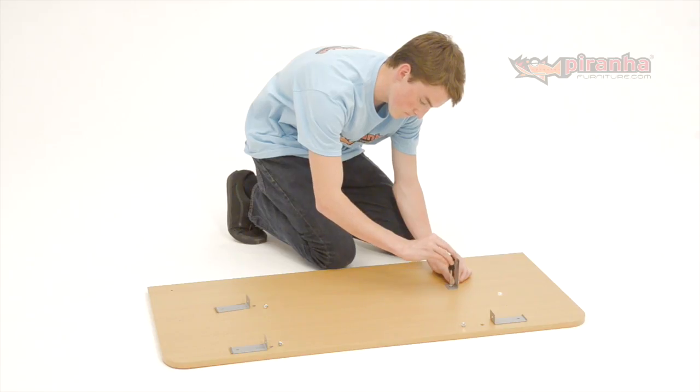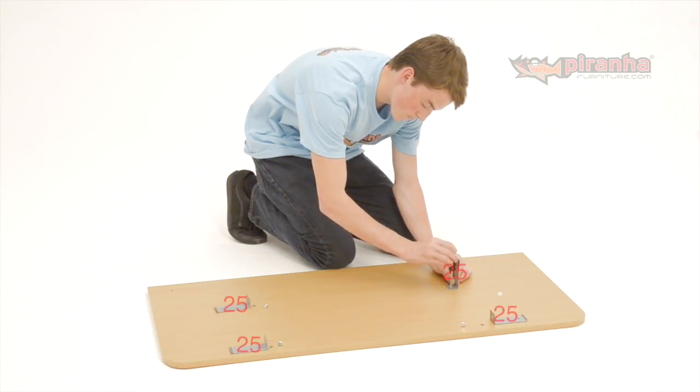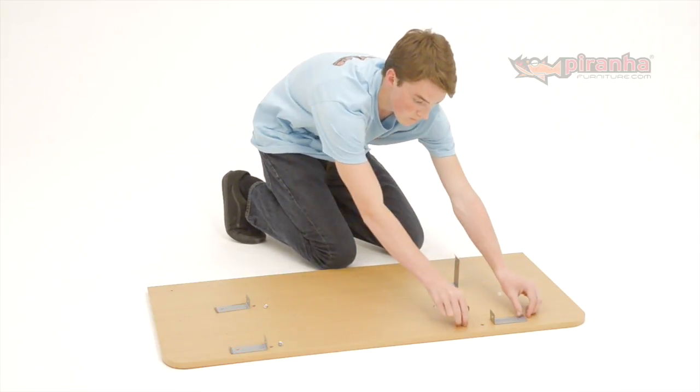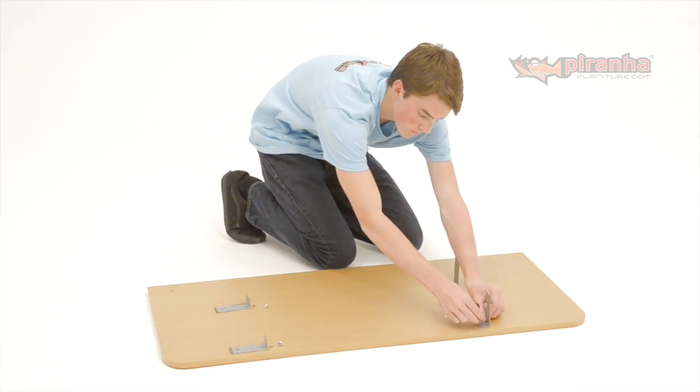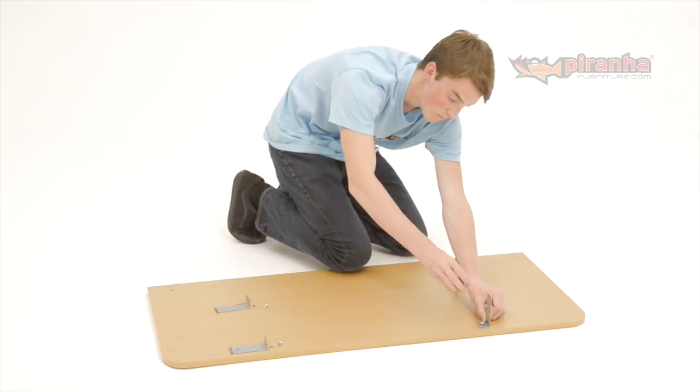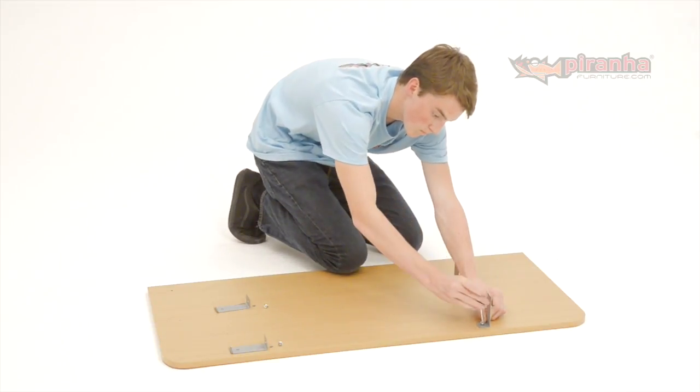Step 18. Place the desktop upside down on a non-scratch surface. This could be some of the cardboard packaging, for example. Then, attach the four keyboard tray brackets to the desktop using the 6x12mm threaded bolts.